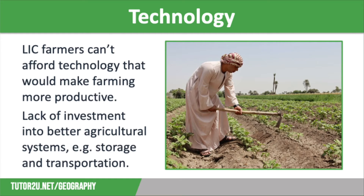Farmers living in LICs do not have the money to invest in the technology that would make their job easier and more productive. For example, they can't afford drought-resistant seeds or better tools, which is particularly important when most of the farming is done by hand, or chemical fertilisers and pesticides developed to improve crop yields and food supplies. On a larger scale, there is also a lack of investment into systems that would make agriculture more efficient, such as transportation, warehouses that could safely store produce, large-scale irrigation systems, and machinery that would enable farmers to plant and harvest much bigger areas of land. This is directly linked to poverty.